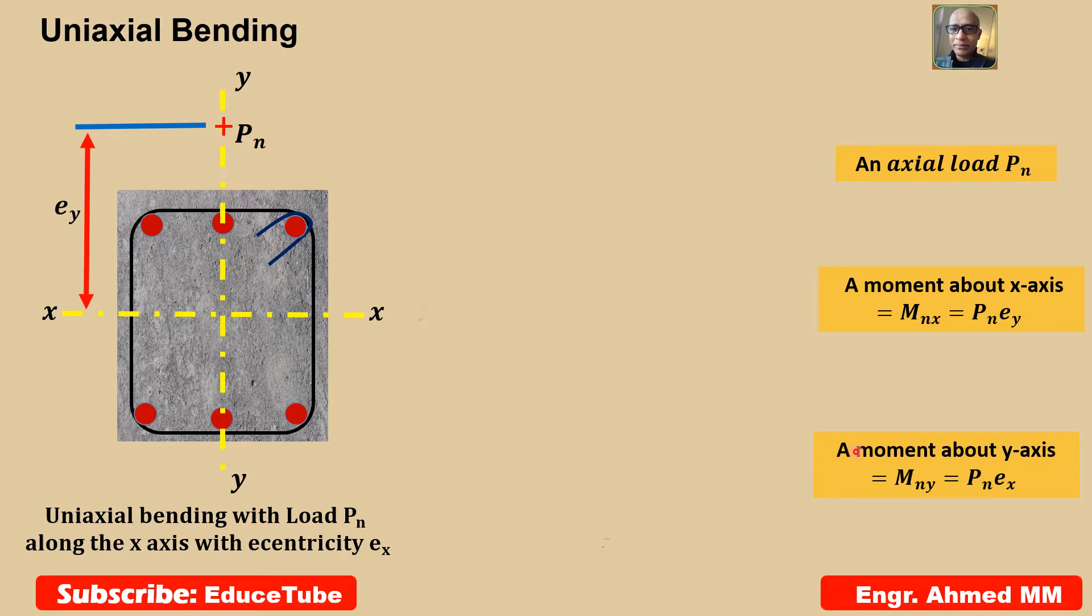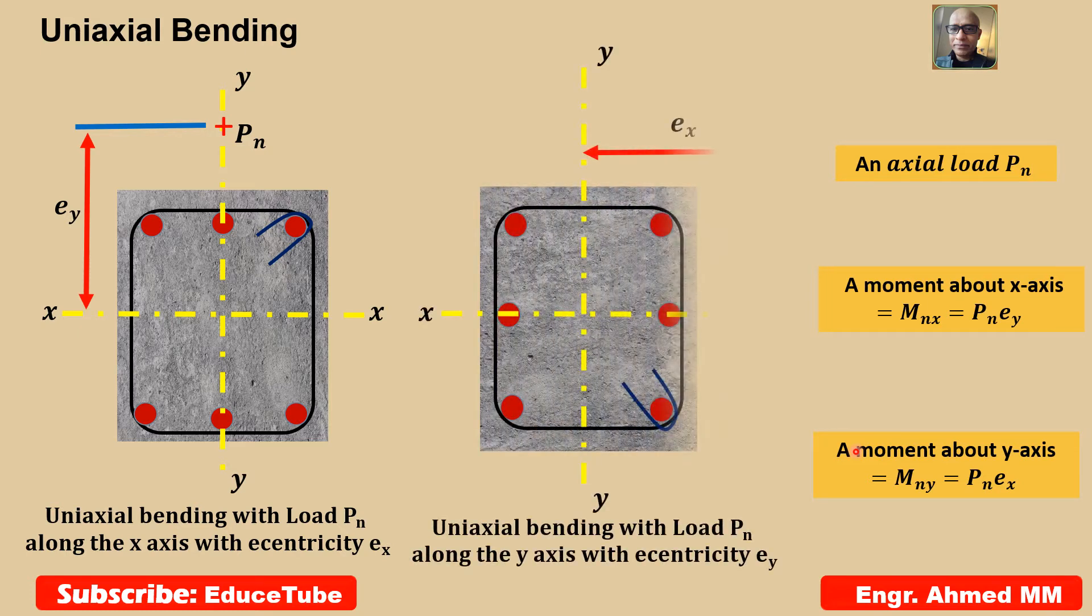For the second case, we are taking the section like this with Pn acting along the x-axis with an eccentricity ex, causing a combination of an axial load Pn and a moment Mny equal to Pn into ex. In case of uniaxial bending, it is easy to calculate. But if it is biaxial bending, it is not that easy.